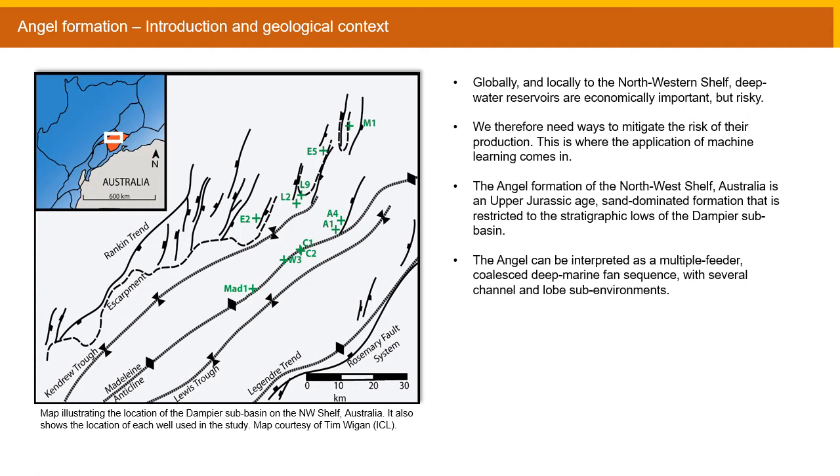The Angel Formation exists as an upper Jurassic multiple feeder coalesced deep marine fan sequence with several channel and lobe sub-environments. It occupies the stratigraphic loads of the rift-related Dampier sub-basin of the northwest shelf. The Angel Formation and other such deep water systems may act as economically important reservoirs but they can be high risk in terms of their reservoir facies quality and reservoir architecture. Therefore a cost-effective way of mitigating these risks is key in exploration and production. This is where machine learning can be very beneficial.